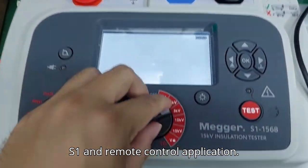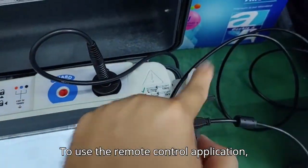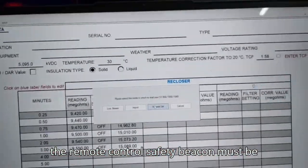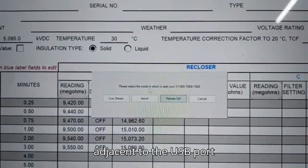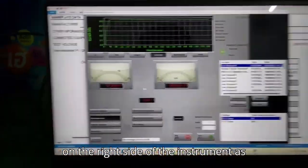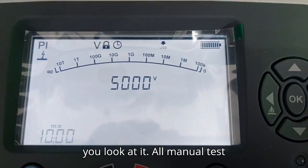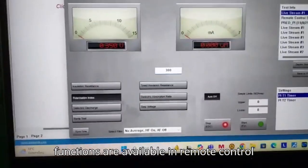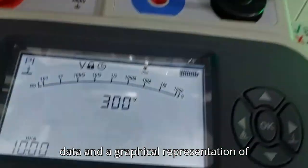To use the remote control application, the remote control safety beacon must be inserted into the nine pin socket found adjacent to the USB port on the right side of the instrument as you look at it. All manual test functions are available in remote control as well as real-time streaming of test data and a graphical representation of resistance, voltage and current in the top left window.